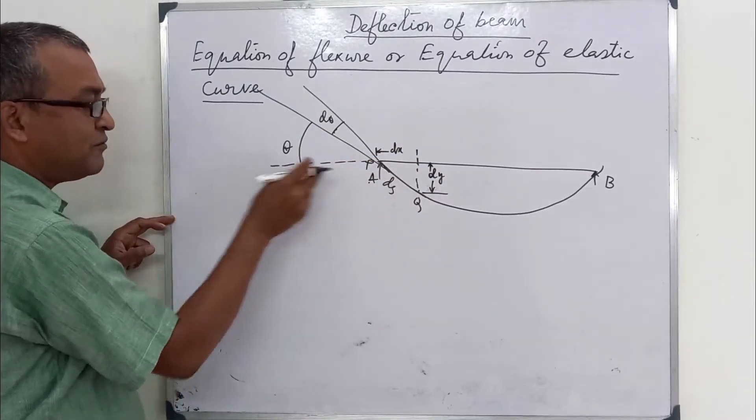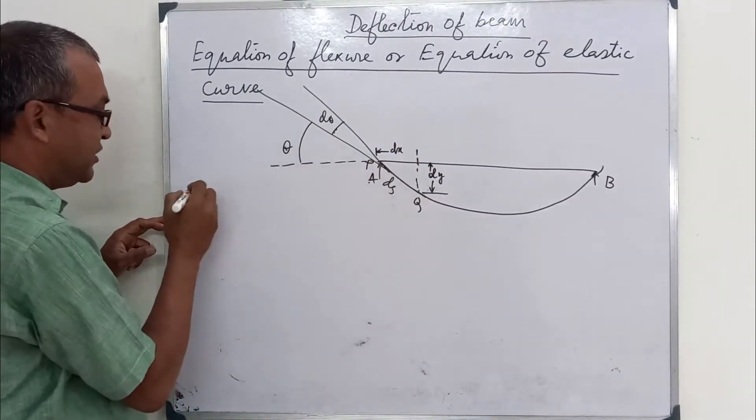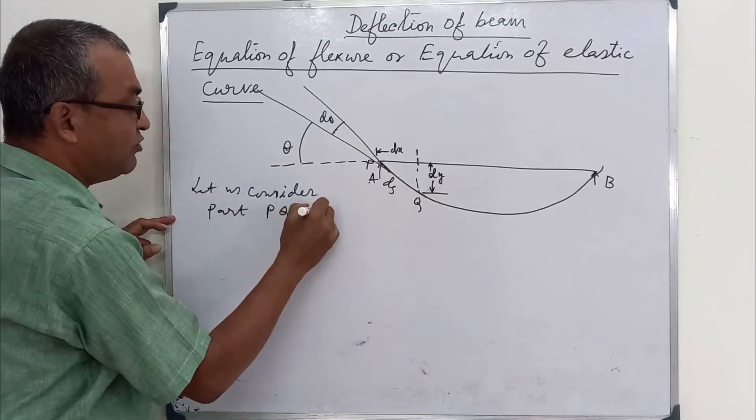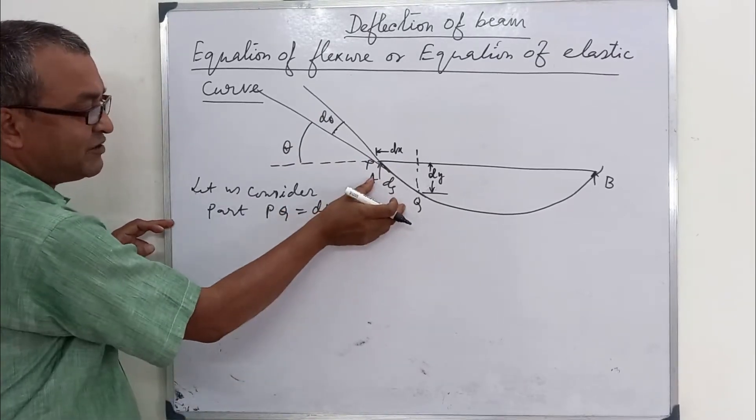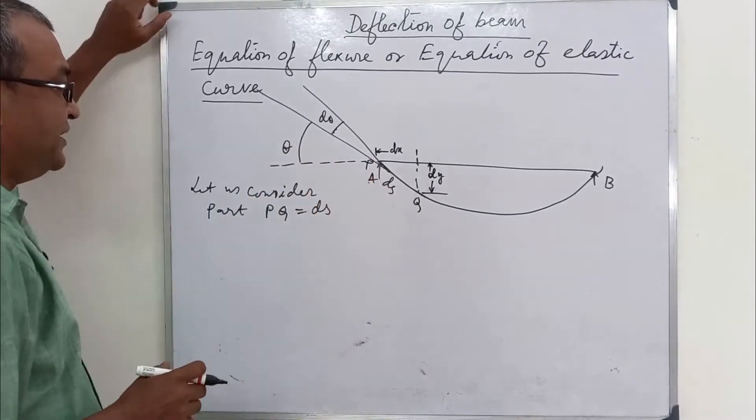Let us consider PQ equal to ds, where ds is the arc length of the small element.